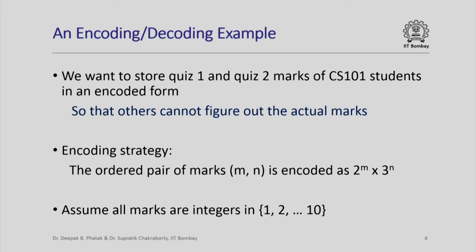Let us pick up a simple example to illustrate the use of functions. In this example we want to store the quiz 1 and quiz 2 marks of all CS101 students in an encoded form, so that others cannot figure out the actual marks even if they get access to the encoded form. The encoding strategy is: an ordered pair of marks (m, n) — where m is quiz 1 marks and n is quiz 2 marks — is encoded as the single integer 2 raised to m times 3 raised to n.